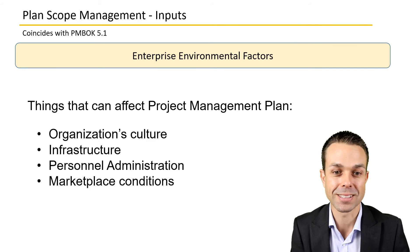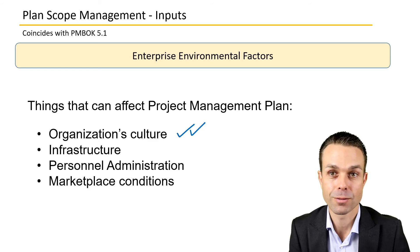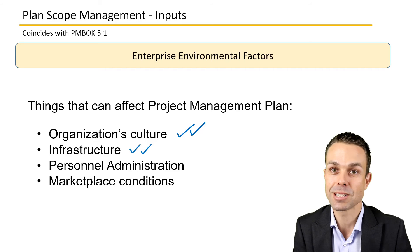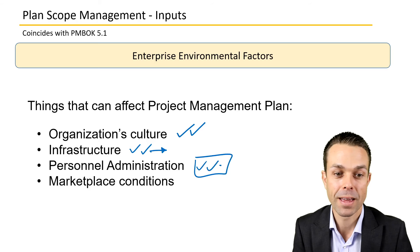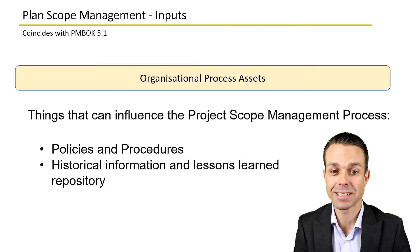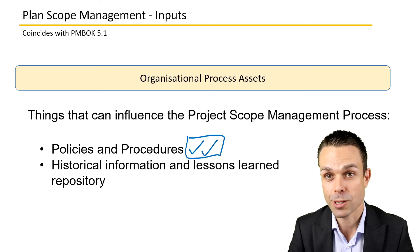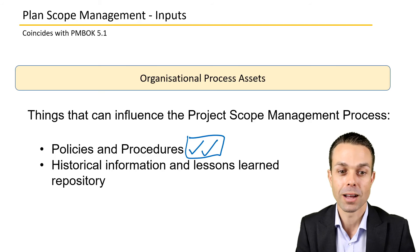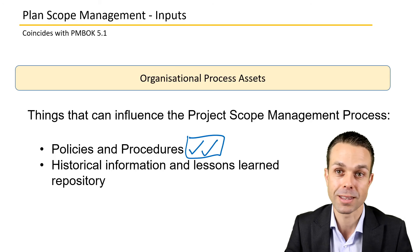EEFs for Planning Scope Management include the existing organization's culture — how is work done, through formal templates or a PMO, or through informal conversations? Also relevant are existing infrastructure and systems, programs in use, personnel administration for getting resources, and marketplace conditions. Organizational process assets include policies, procedures, templates from a PMO or functional management environment, as well as historical information and lessons learned from previous projects.